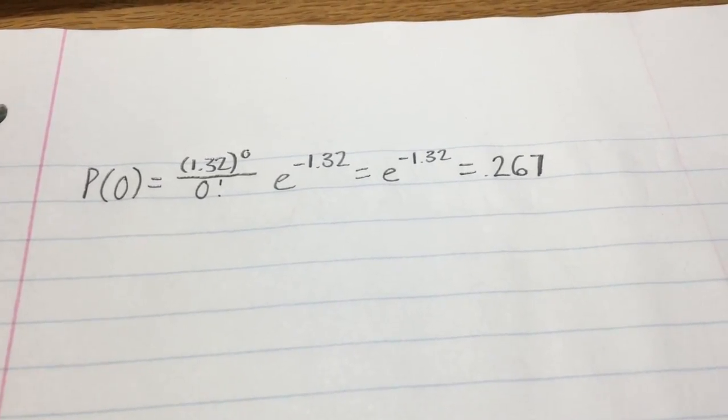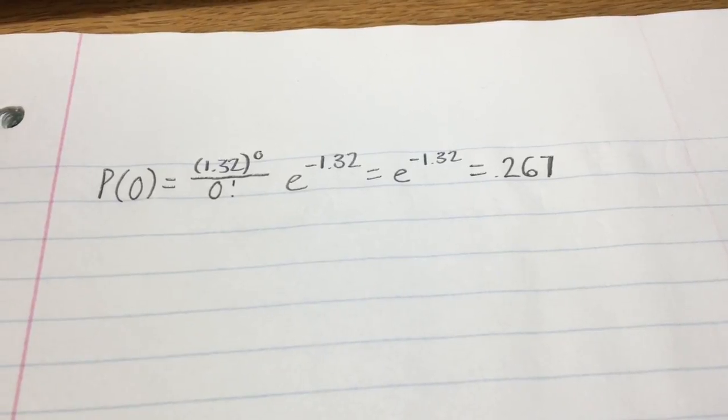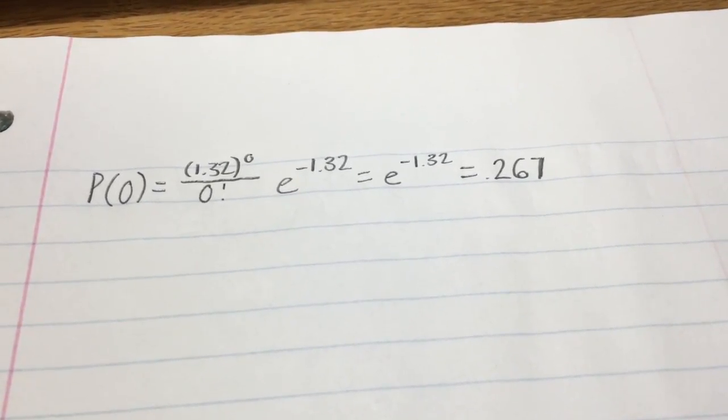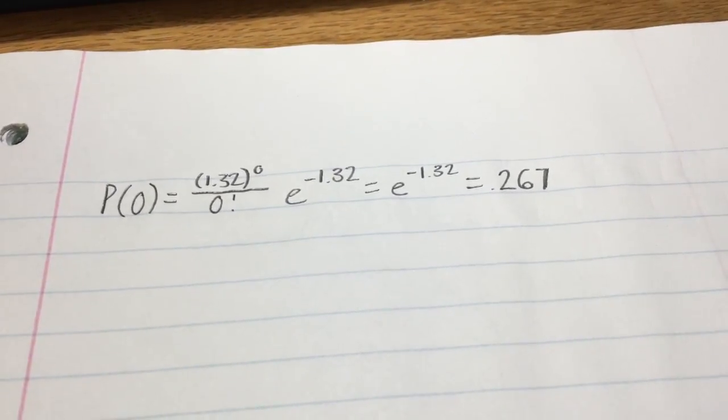Okay, so for Exam 2, Question 2, the question reads: according to www.meertricks.com, traffic fatalities occur at the rate of 1.32 fatal accidents per 100 million miles.